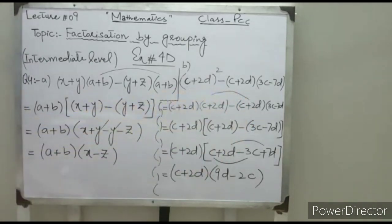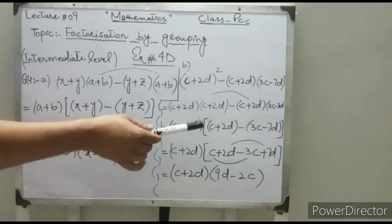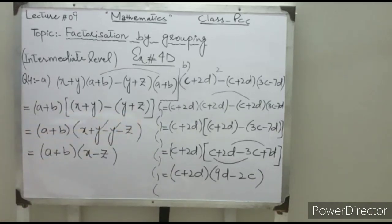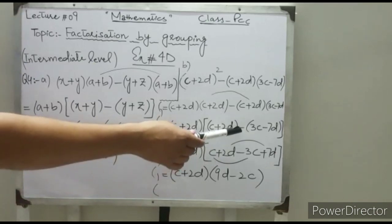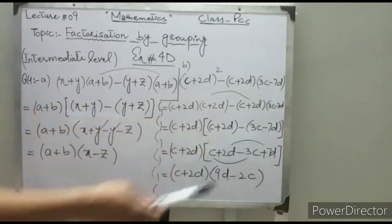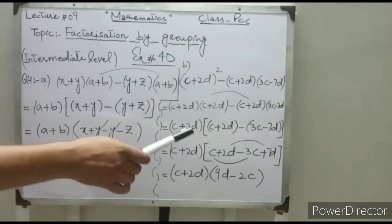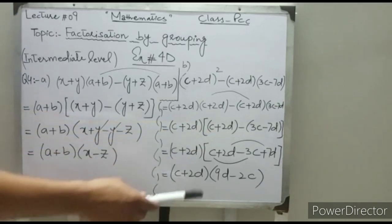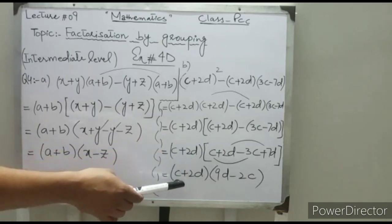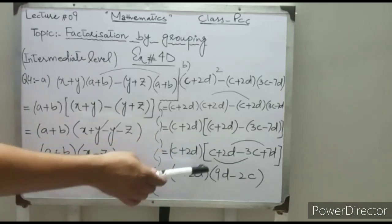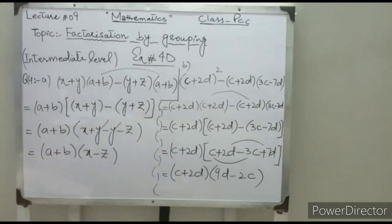Take (c plus 2d) common — the remaining is (c plus 2d) minus (3c minus 7d). Expanding: c plus 2d minus 3c — the two minuses make positive 7d. Combining like terms gives 9d minus 2c. So the final factors are (c plus 2d)(9d minus 2c).